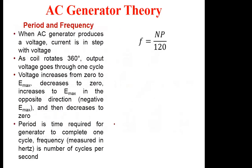We want to see the link between the frequency of the generated EMF, the number of poles in the machine, and the speed of the rotating machine. When an AC generator produces the voltage, current is in step with the voltage — current and voltage are in phase. As the coil rotates 360 degrees, the voltage goes through one complete cycle, increasing from zero to E-max and decreasing back to zero. The period is the time required to complete that one cycle.